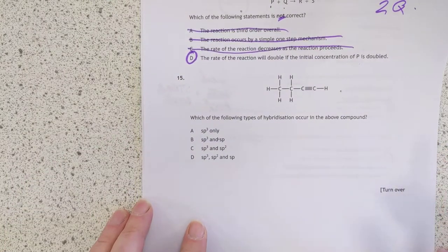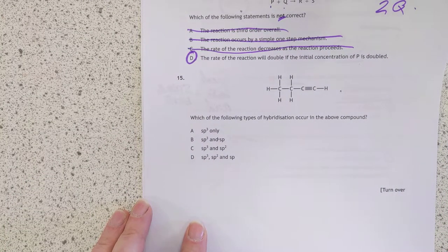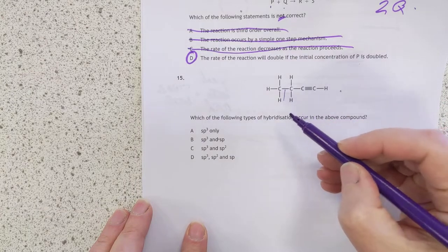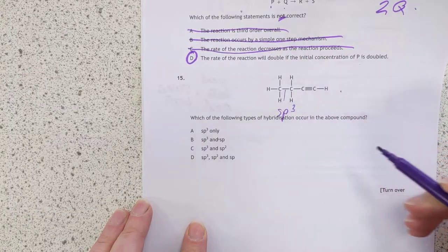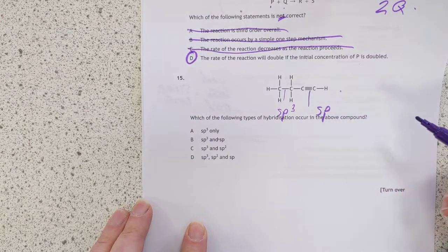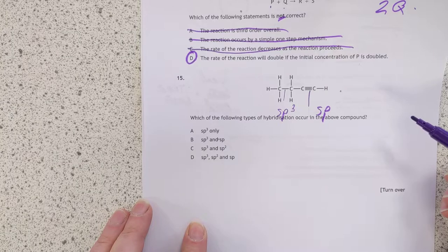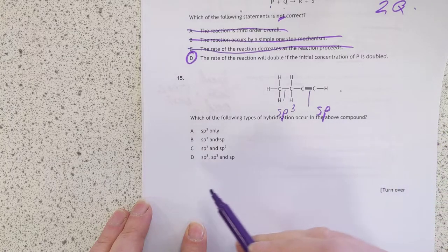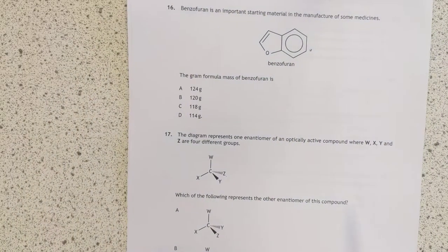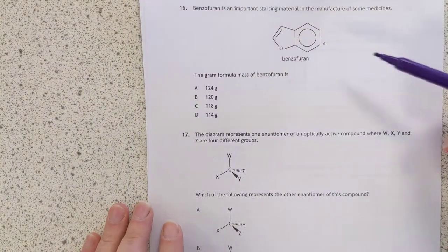Number 15. Which of the following types of hybridization occur in the above compound? Well, these bonds here are SP3. These bonds here are SP. But there's no double bonds, which means there's no SP2s. So I'm going to go with B.